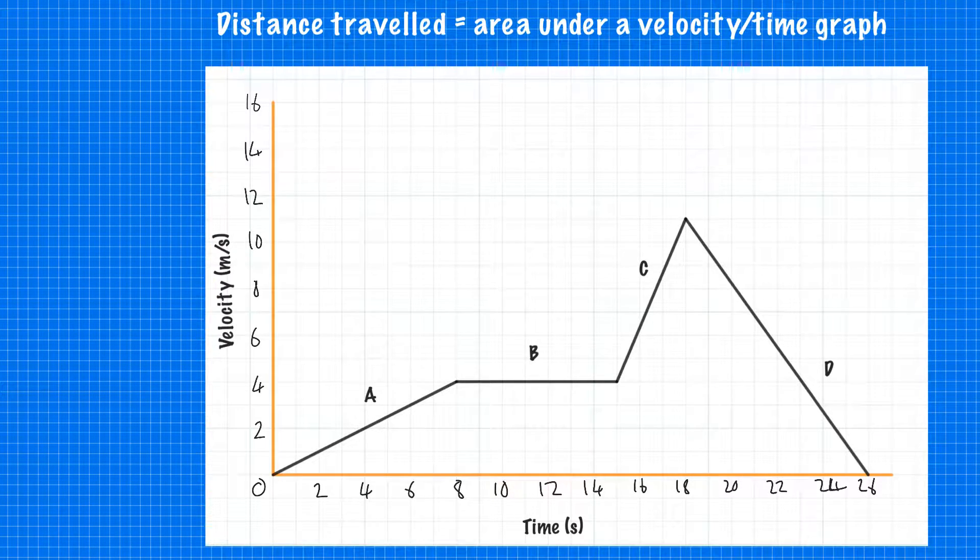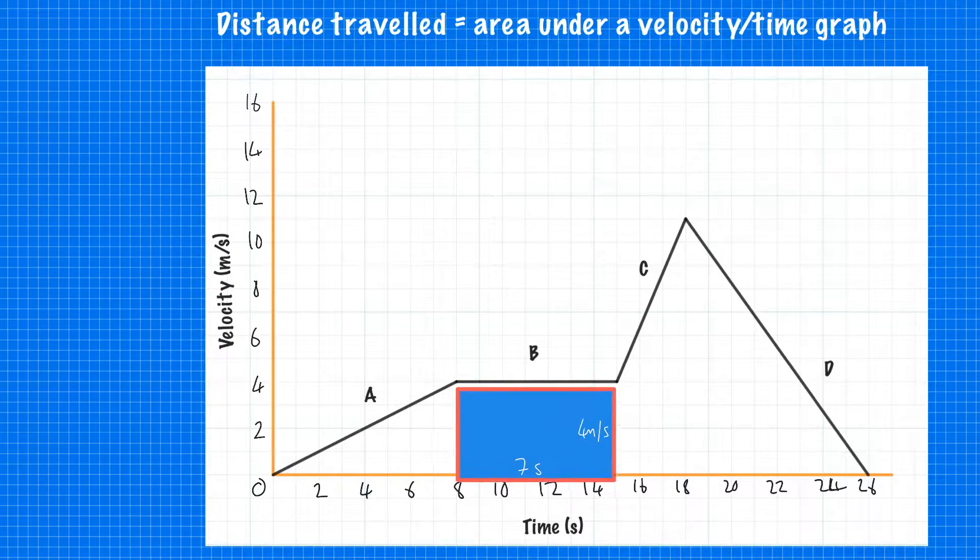We'll start by looking at the distance traveled throughout section B. That's when the vehicle is traveling at a constant velocity from this point. We effectively need to split this into a rectangle underneath.